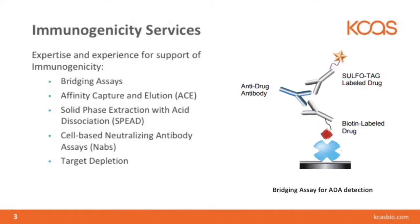The most commonly used format for the support of immunogenicity is the bridging assay. The assay that we perform here at KCAS utilizes the Meso Scale Discovery platform. This assay uses the drug itself to pull out the anti-drug antibody from the sample. That is done by typically biotinylating the drug and then adding a ruthenium label to the drug, and therefore it forms a bridge when the antibody binds to each of those respective labeled drugs. You then add it to an avidin plate, it adheres to the plate, and you can get a signal. This gives you good sensitivity and typically a fair amount of drug tolerance.